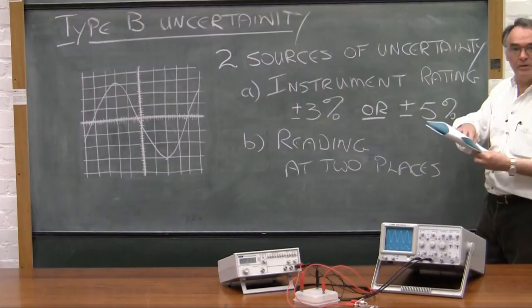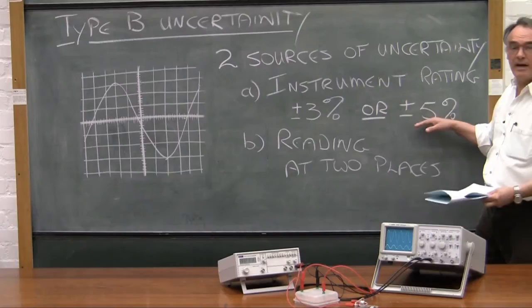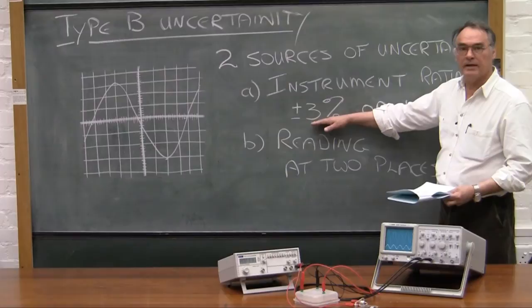The instrument rating is given to you in the manual and it will tell you that it will either be plus minus 3% or 5%, and the difference is this: